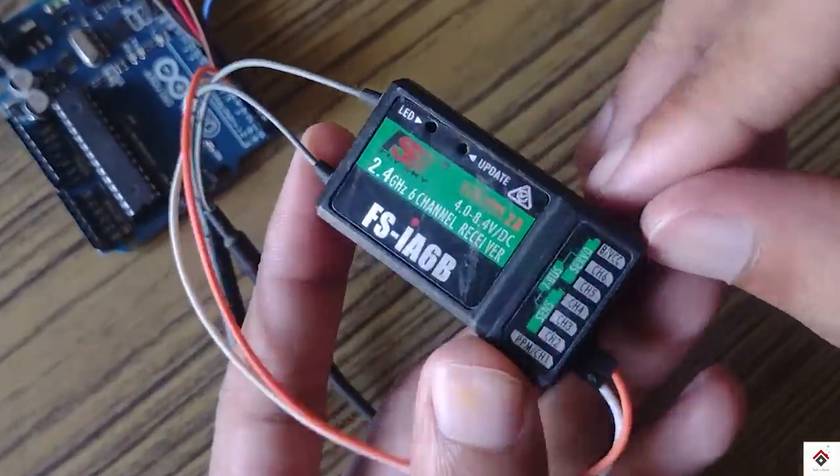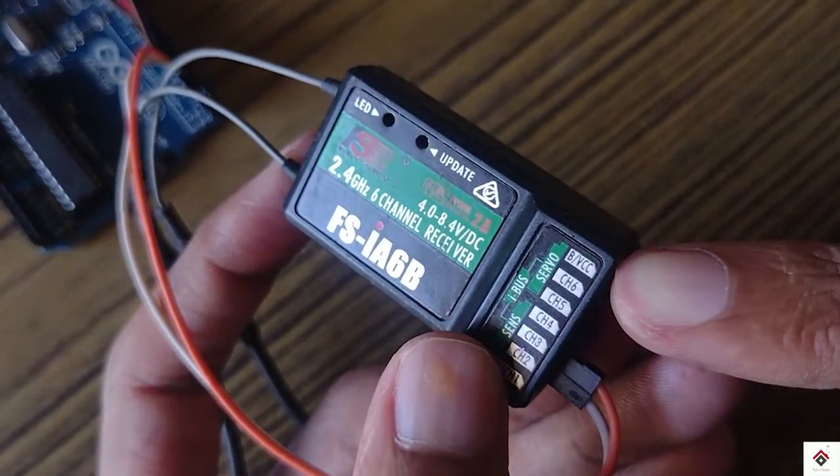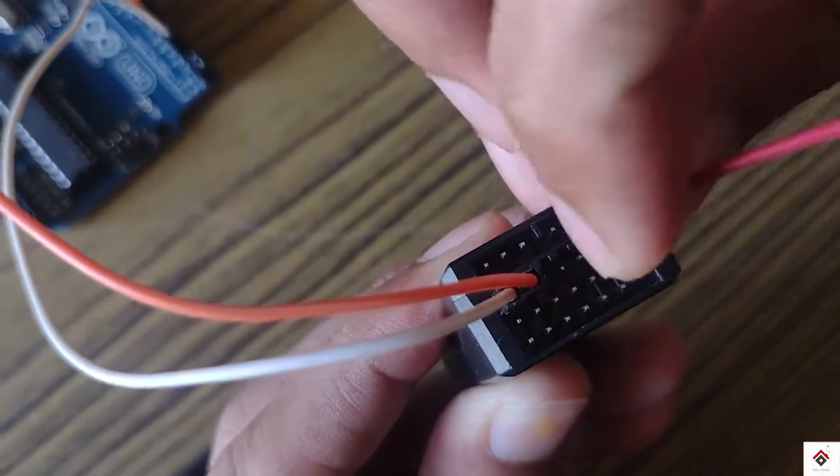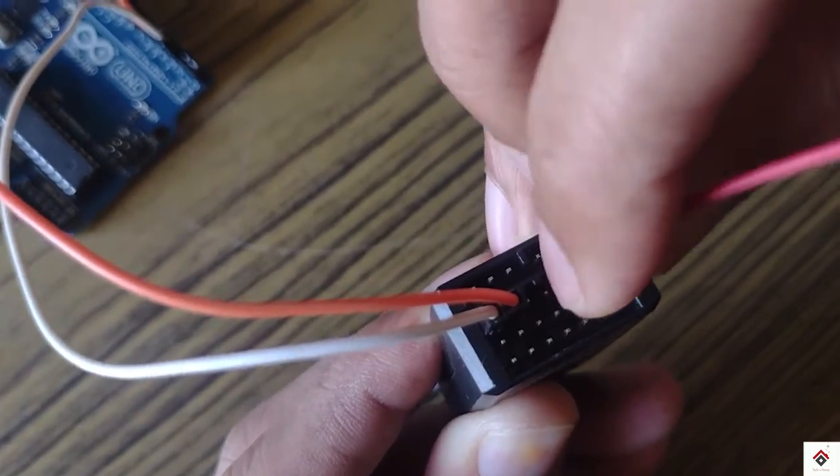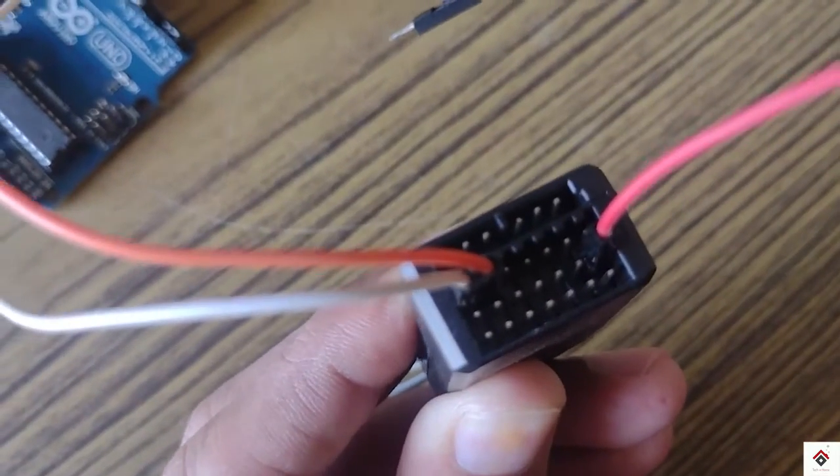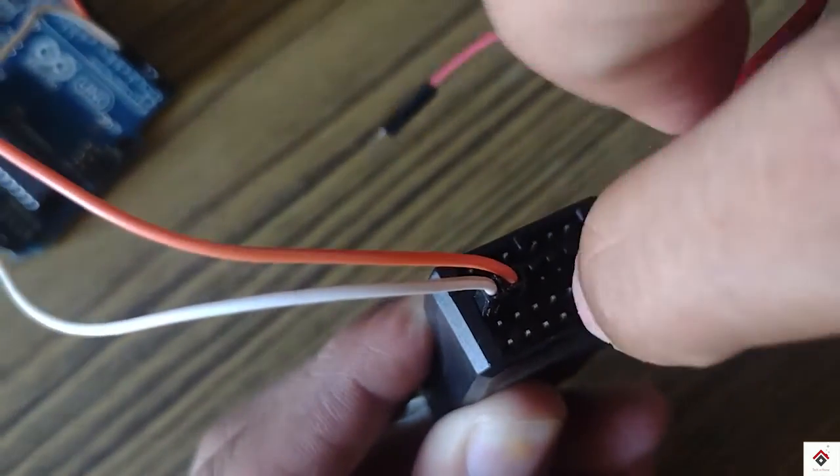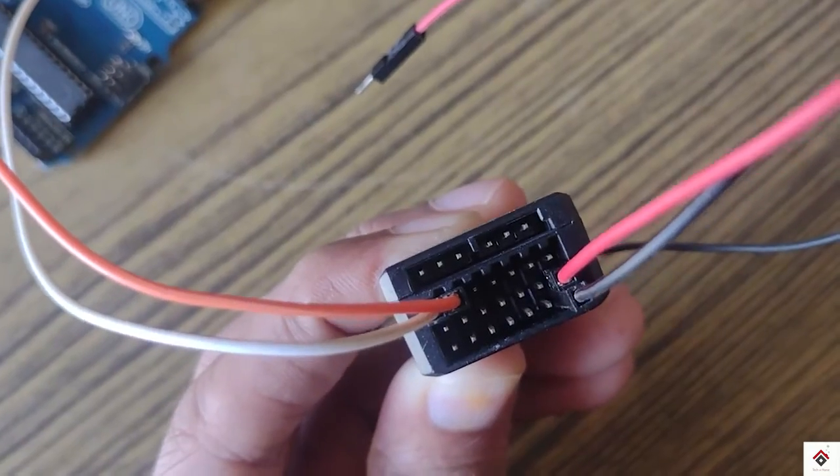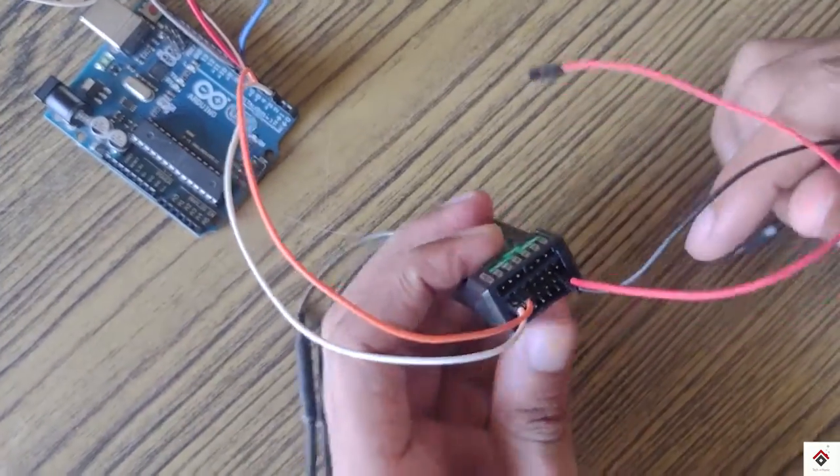To power up the receiver we have to make use of this B/VCC port. In this port the center pin will be the positive, the bottom pin will be ground. This receiver requires 5-volt power supply for its operation.